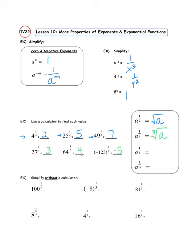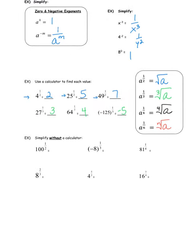We write it like a square root, but we put a little 3 in that crook — that's called the index. So a to the one-fourth power ends up being the fourth root of a. And generically, a to the one-over-n is the nth root of a. Now let's simplify some without using a calculator. 100 to the one-half power is the same thing as saying the square root of 100, and that, of course, is 10.